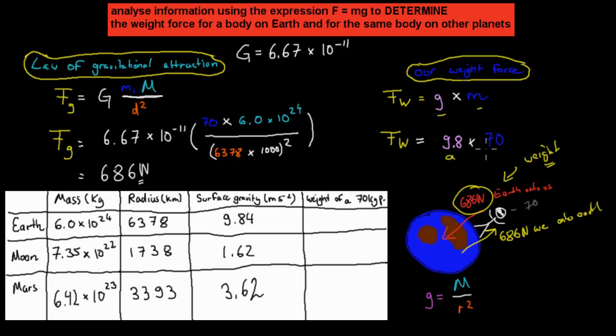Which is why if we put all of that into an equation, force equals acceleration times the actual mass, we would get the same value, 686 newtons. Because all we're saying here is we're being pushed towards the Earth by 686 newtons, because the gravitational field of the Earth is 9.8 meters per second per second, and our mass is 70 kilograms.